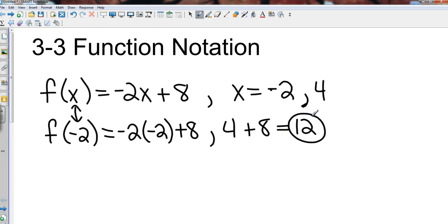So for that function where x is negative 2, the actual function value is 12. So now I do the next one. I do a function of 4, which just means I take that original equation and everywhere I see an x I replace it with a 4. So I've got negative 2 times 4.